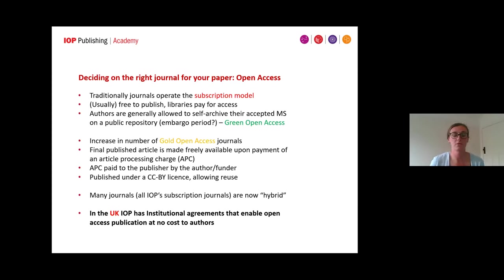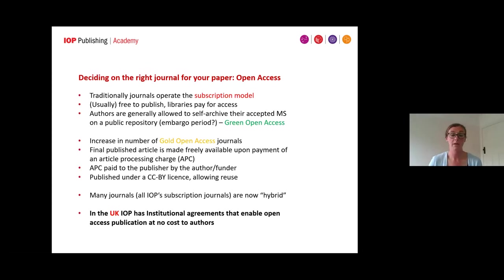It's very important to consider the publication model — whether that's subscription or open access. Traditionally, journals have operated a subscription model where it's free for authors to publish but libraries pay for access to read the journal. Authors are generally allowed to self-archive their accepted manuscript in a public repository after an embargo period, typically 12 months — this is often referred to as green open access.